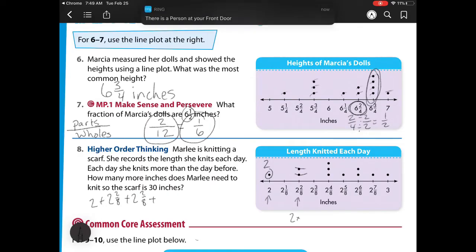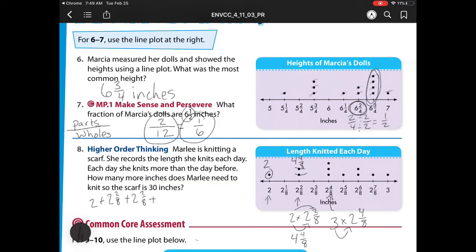Here she's knitted 2 times 2 2/8, which that is 4, and then 4 eighths. So here she's knitted 4 and 4 eighths. Over here we have 3 times 2 4/8. So we have 6 and 12 eighths, which I can reduce that to, pull out one whole, and I would have 4 eighths left. So I have 7 and 4 eighths. Here she's knitted 2 and 5 eighths. Here she's knitted, and now I need to write over on this side, 2 times 2 and 6 eighths, because there's 2 dots. So that is 4 and 12 eighths, which we know is the same as 5 and 4 eighths. And then we have 2 and 7 eighths, and 3.